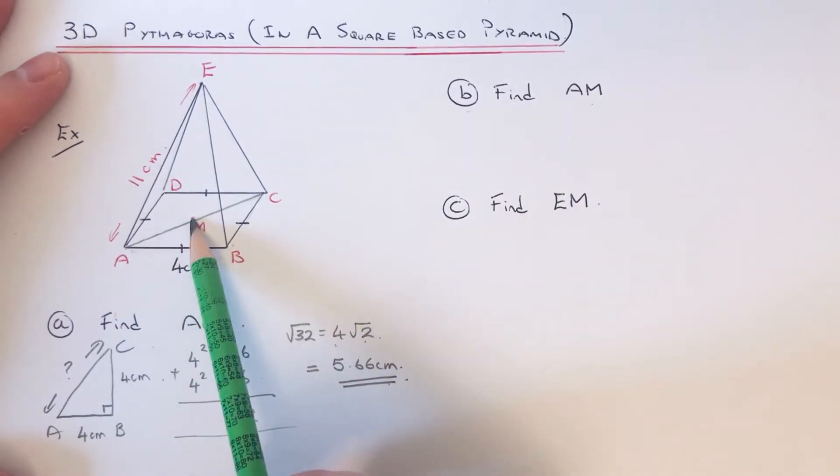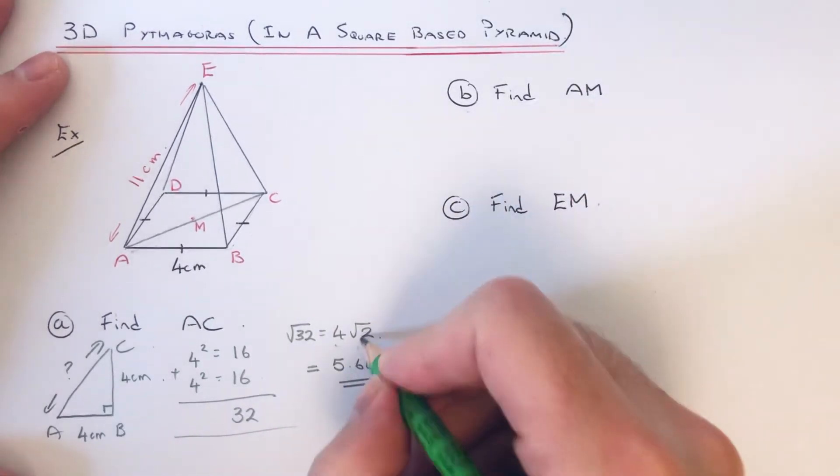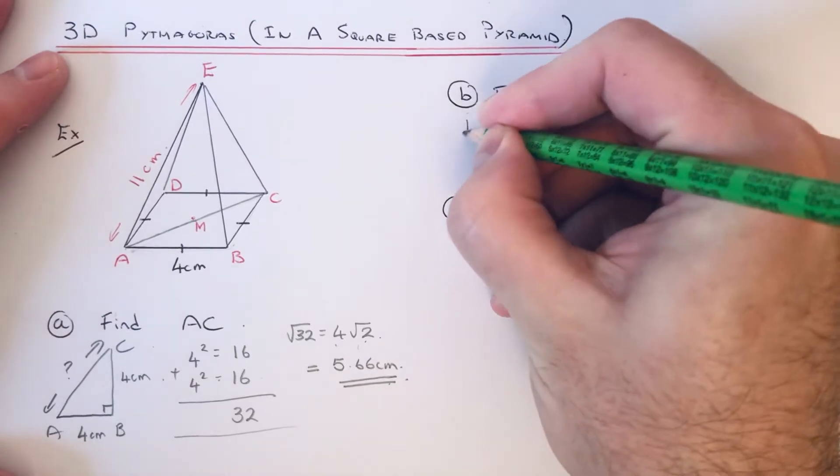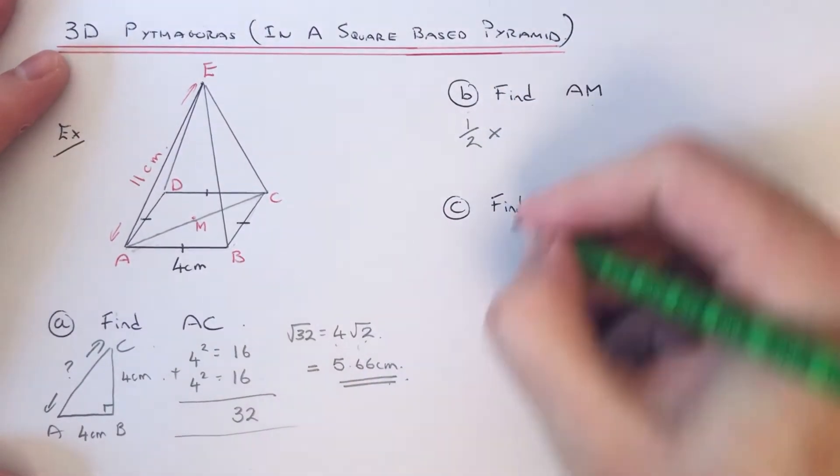So for part B, we've got to find AM. So M is the midpoint of the square, and it's just halfway in between A to C. So we just need to half this answer here.